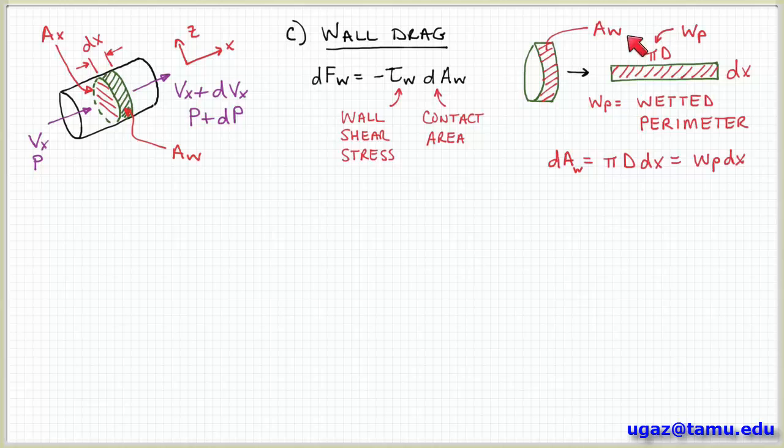So instead of π times the diameter, I can express this in terms of this variable W_p. So W_p means the wetted perimeter. So that means the perimeter associated with the contact area of the fluid with respect to the pipe wall. So then dA is just length times width. So πd times dx or the wetted perimeter times dx.